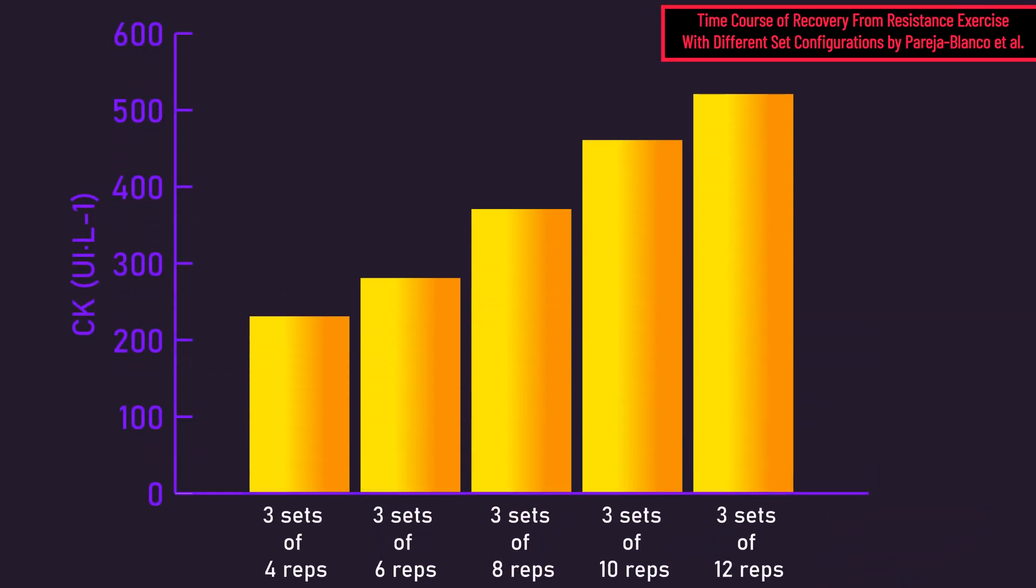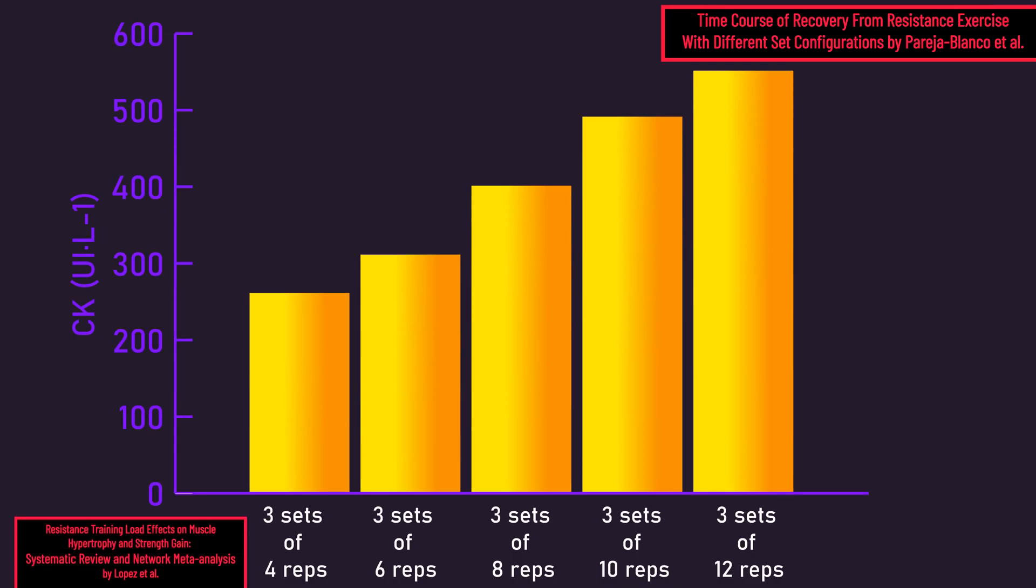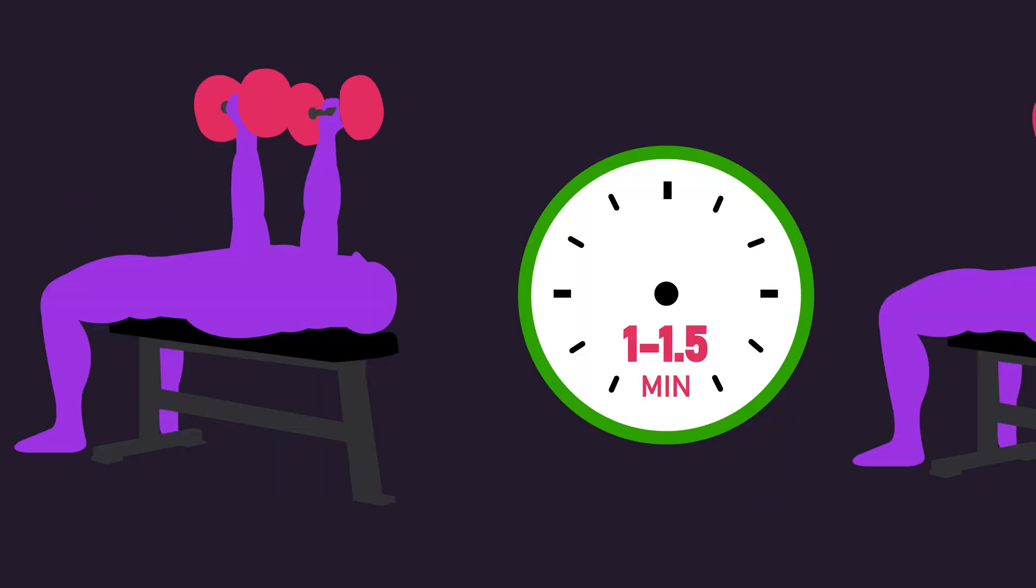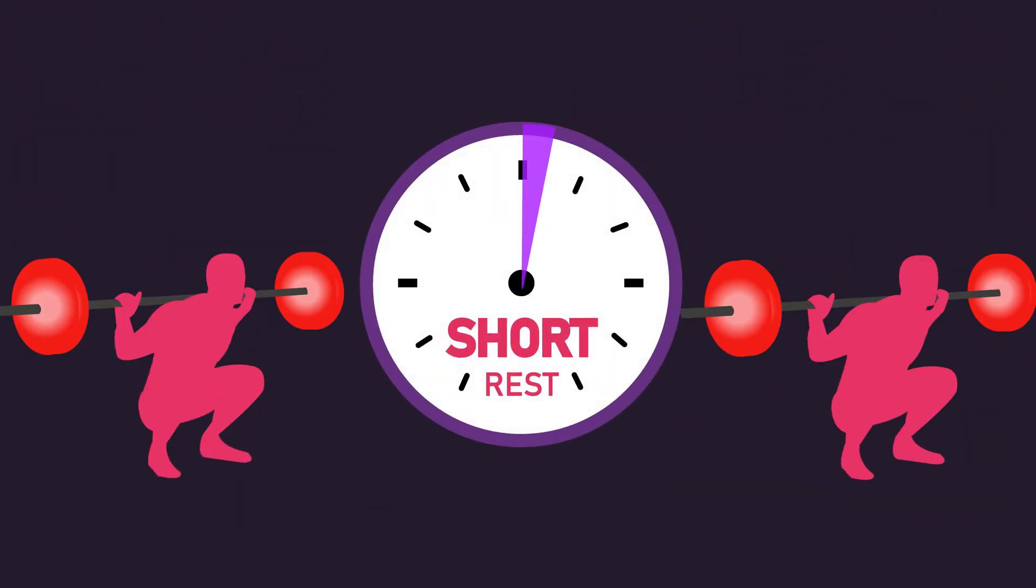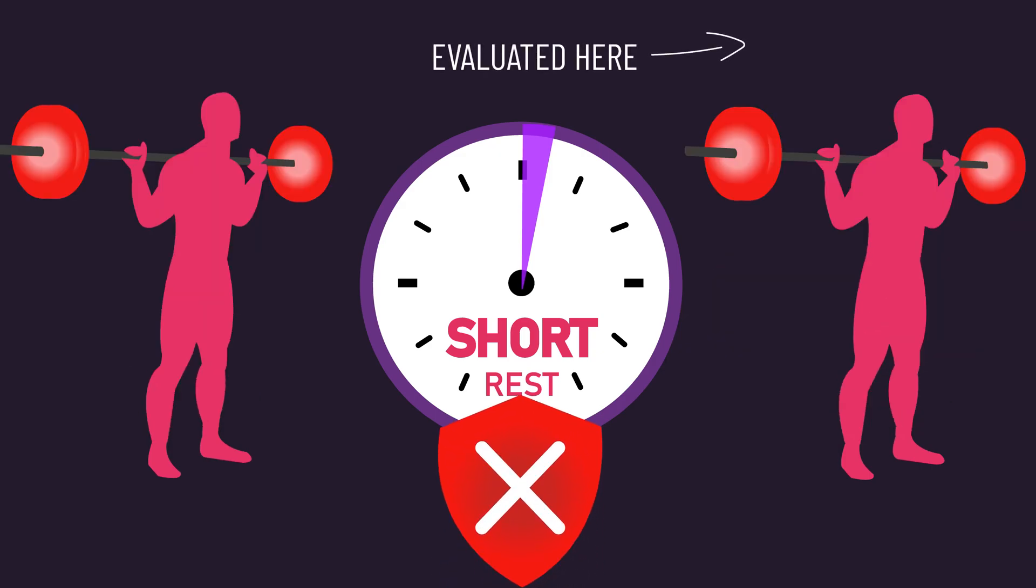Higher repetitions likely cause more muscle damage, but we know they are similarly effective to lower reps for hypertrophy. Short rest between sets likely cause more muscle damage, but short rest between sets of exercises recruiting large amounts of muscle mass is actually suboptimal for hypertrophy.